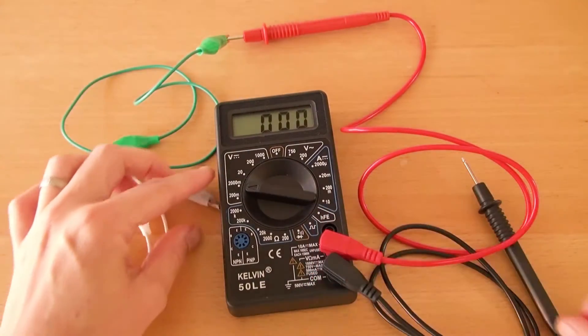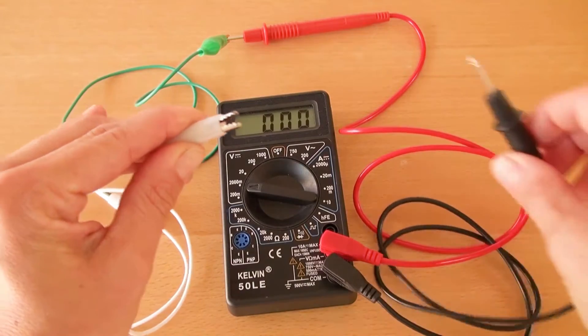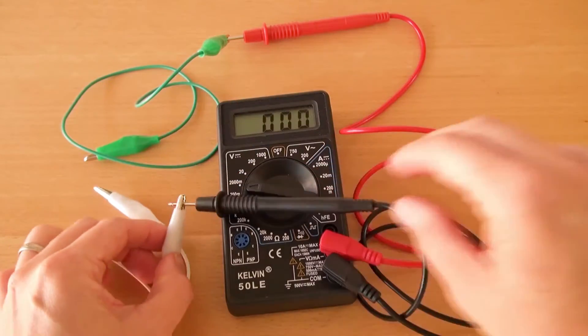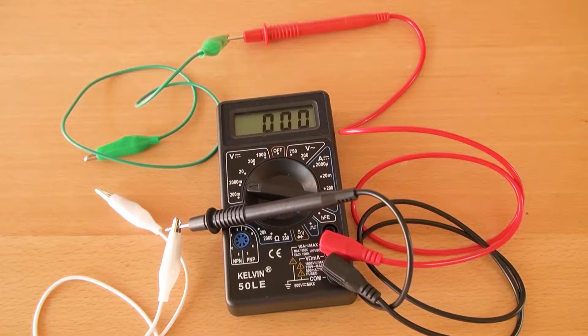Repeat the same step with the white alligator clip and the black multimeter probe. Now you are ready to measure your microbial fuel cell voltage.